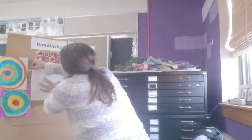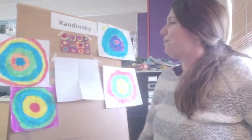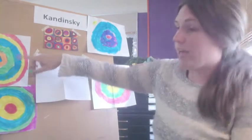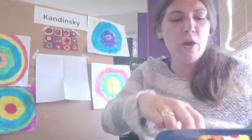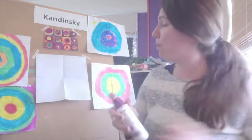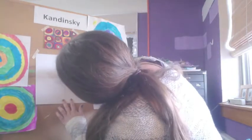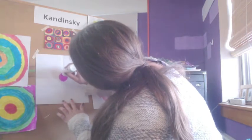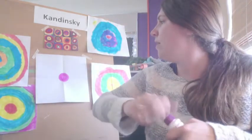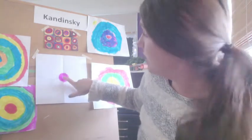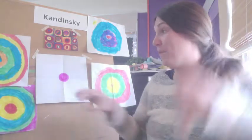Up on the board there are some examples of dot paintings that friends here in school created. Some people chose to draw their circles with pencil first before they went in and colored — I'm just going to go for it. I'm going to start with a purple dot right in the middle, shake this a little bit, press down, and start moving it in a circular motion. I'm not going to use a color similar to this purple — I'm going to use a totally different color that will make it pop. I'm going to use orange.